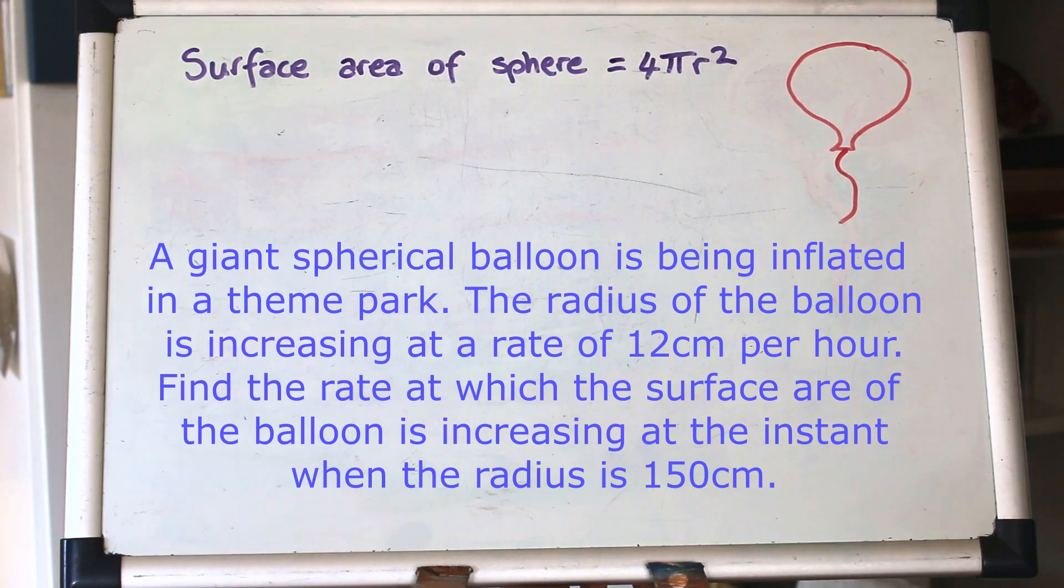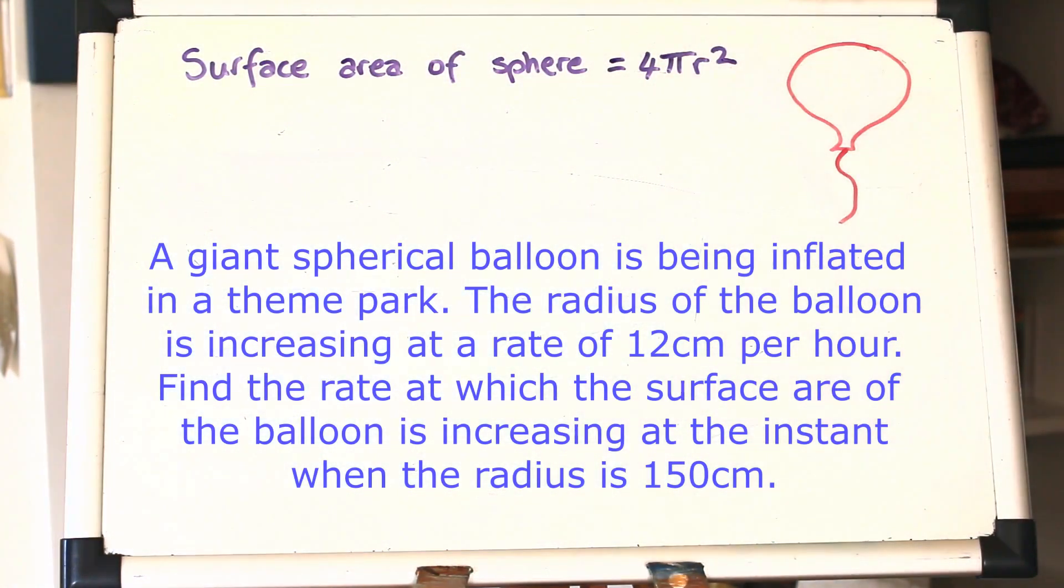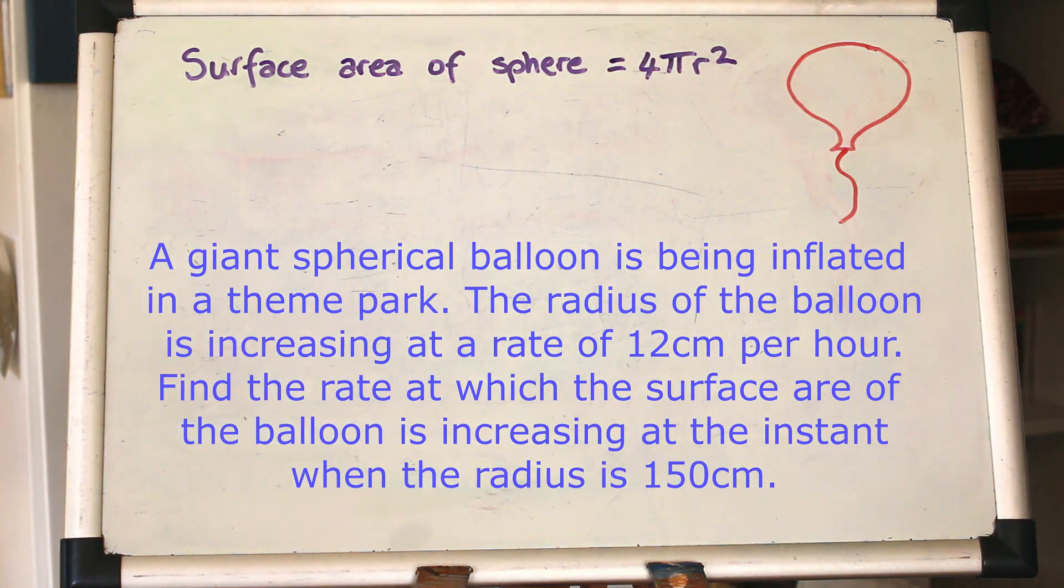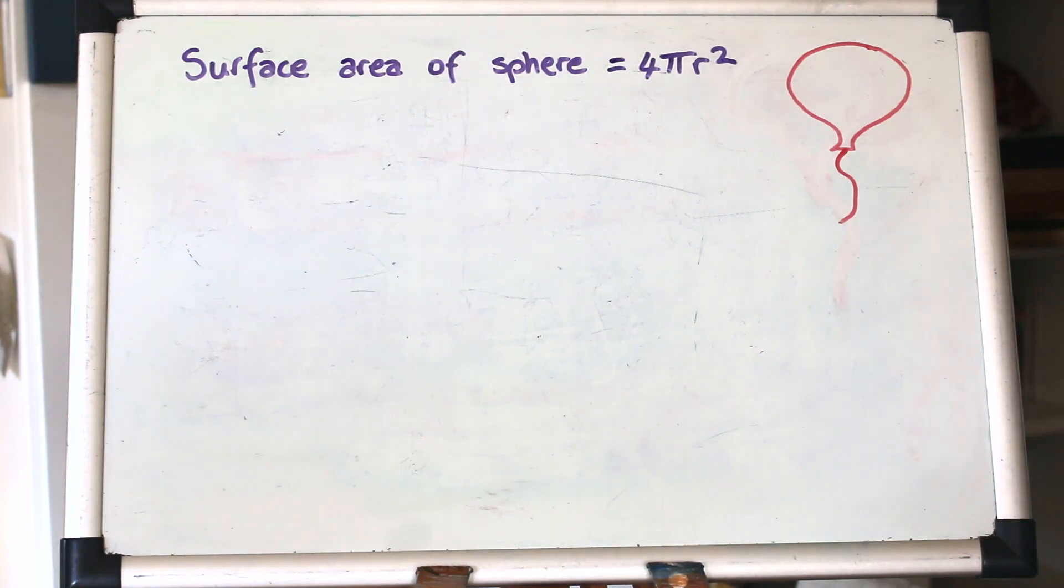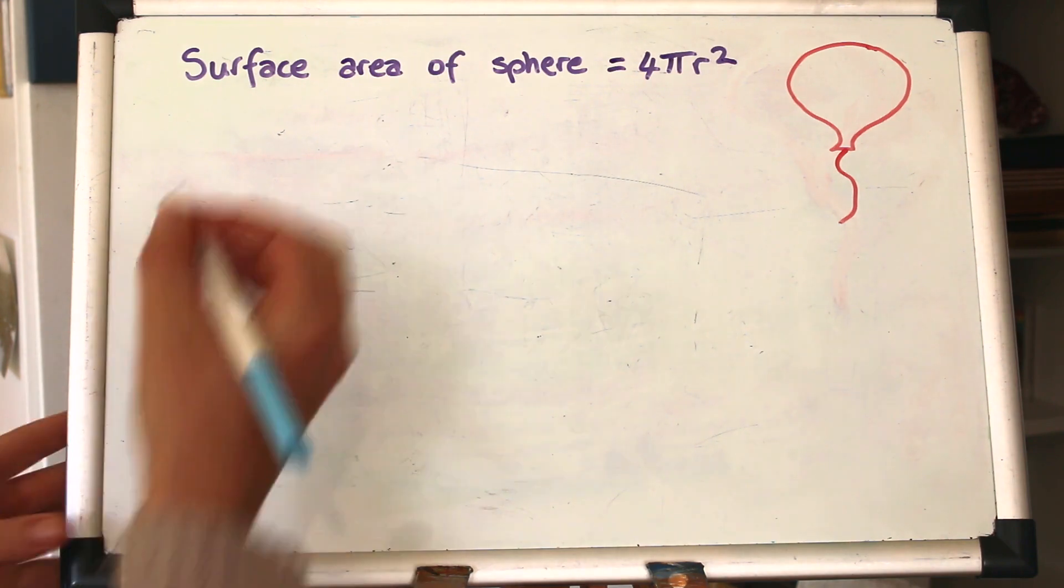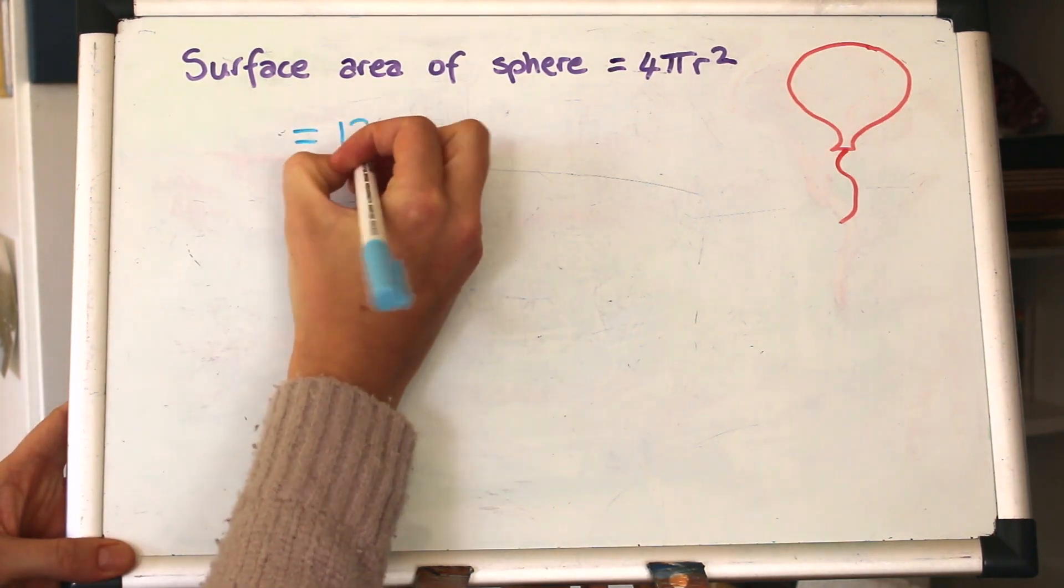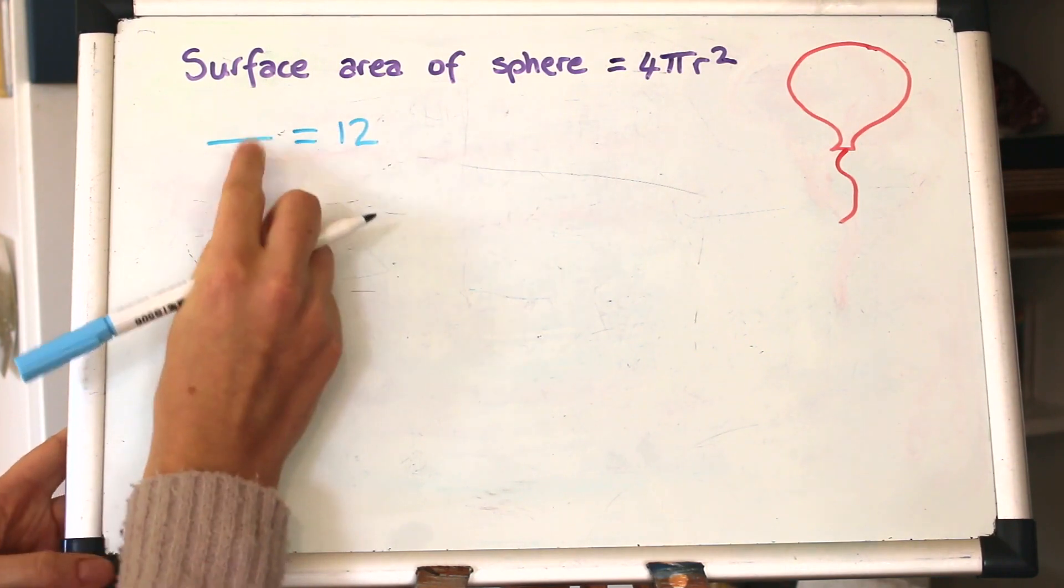So here we have our first question. I'll leave that there for a few moments for you to take a note if you want to. We've got a big balloon being inflated and we're given the surface area of a sphere, which is useful. We don't have to know that off by heart. So really in these kind of questions we just need to figure out what we're being told and what we're being asked for and make a kind of chain rule type equation to help us out. We're given that the radius of the balloon is increasing at a rate of 12 centimeters per hour. So we're given something is 12 and how to know what that thing is that we're being told.